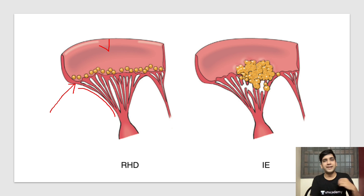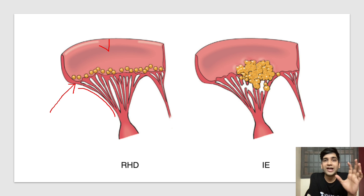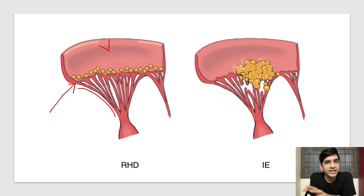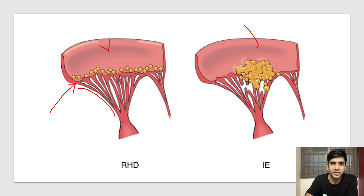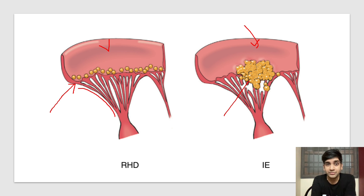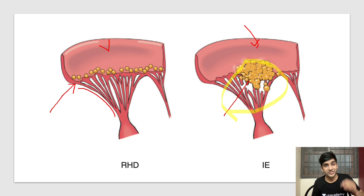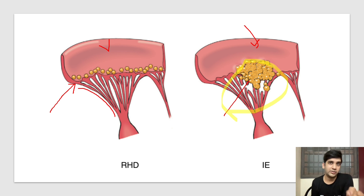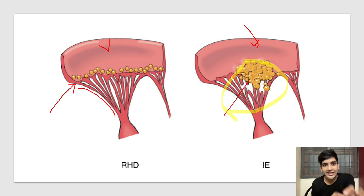The second point: rheumatic heart disease vegetations are sterile — they don't have any microorganisms, even though it is related to streptococcus. These are due to immune-mediated damage. The only vegetations you see that are infective are infective endocarditis vegetations. They are large, friable, fragile, and bulky. They have actually destroyed the chordae tendineae and the valve. The only vegetation with infection, the only one that destroys cardiac valves, and the only one fragile enough to give rise to an embolus — all of these are infective endocarditis.